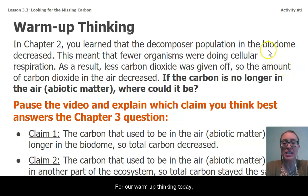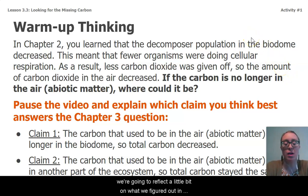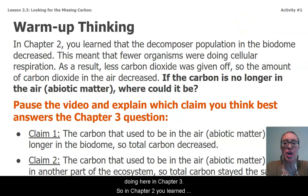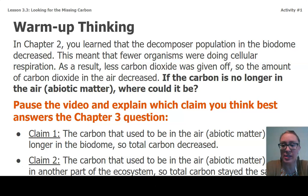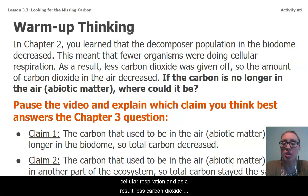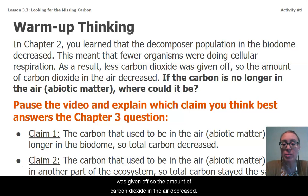For our warm-up thinking today, we're going to reflect on what we figured out in Chapter 2 and how that applies to what we've been doing here in Chapter 3. In Chapter 2, you learned that the decomposer population in the biodome decreased, and this meant that fewer organisms were doing cellular respiration. As a result, less carbon dioxide was given off, so the amount of carbon dioxide in the air decreased.